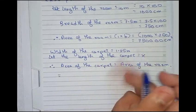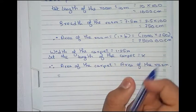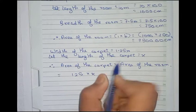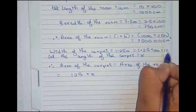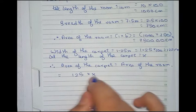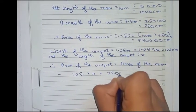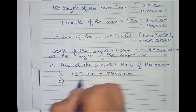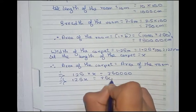The area of the carpet means length into width, so length is x and width is 1.25 meter. Equals to 125 into x, we write here 125 into 100, that is 125 centimeter. We convert it into centimeter so it becomes 125 into x equals to area of the room that is 750000. It becomes 125x equals to 750000.